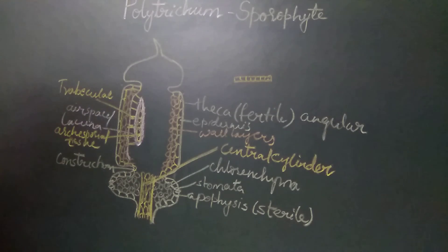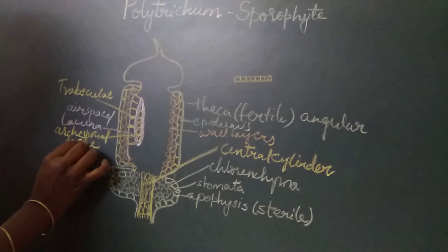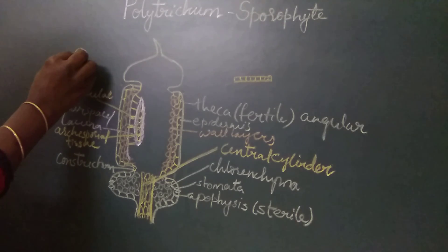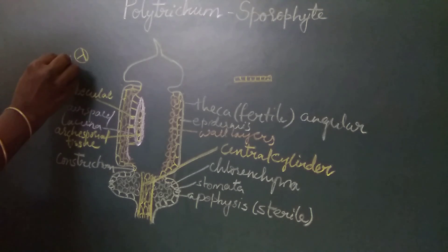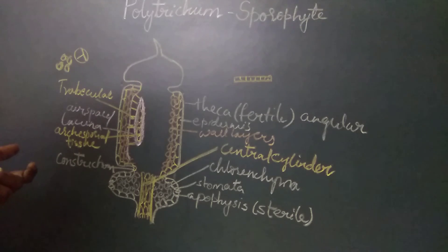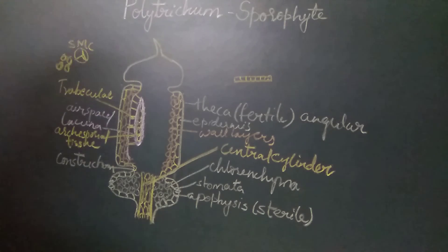Initially the archisporeal tissue is single-layered, but as the capsule matures it divides and forms a number of layers or cells. Ultimately these cells differentiate into spore mother cells, and the spore mother cells undergo reduction division to form spore tetrads. That means as the capsule grows older, a single layer of archisporeal tissue divides to form many layers, which are ultimately differentiated as spore mother cells that undergo reduction division to form spore tetrads.